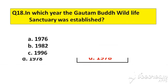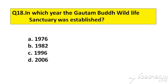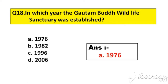Question number 18. In which year was the Gautamputha Wildlife Sanctuary established? Option A: 1976. B: 1982. C: 1996. D: 2006. The right answer is option A, 1976.